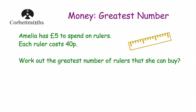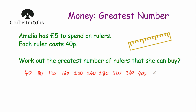Another approach would be to write down the multiples of 40 — working out the cost of buying the rulers. One ruler is 40p, two is 80p, three is £1.20, four is £1.60, then £2.00, £2.40, £2.80, £3.20, £3.60, £4.00, £4.40, £4.80. Now she's only got £5 and each ruler costs 40p — she's only got 20p left, so she hasn't got enough for the next ruler. Counting those up: 1, 2, 3, 4, 5, 6, 7, 8, 9, 10, 11, 12 — so she can buy 12 rulers and she's got 20p left over.